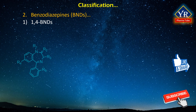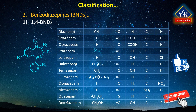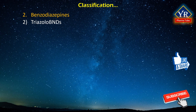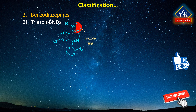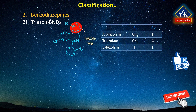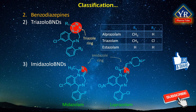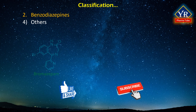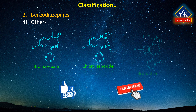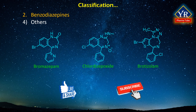The structures of 1,4-benzodiazepines are shown here. Triazolobenzodiazepines chemically differ from other benzodiazepines by having an additional fused triazole ring; these include alprazolam, triazolam, and estazolam. Imidazolobenzodiazepines are midazolam and loprazolam. Other benzodiazepine drugs include bromazepam, chlordiazepoxide, and brotizolam.